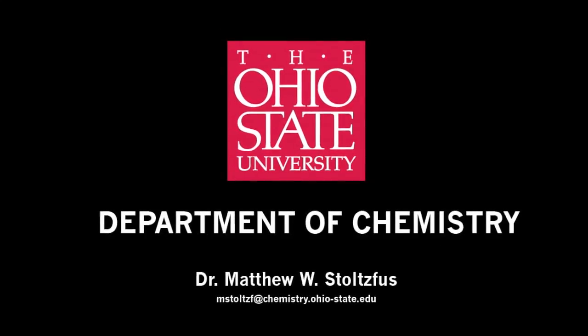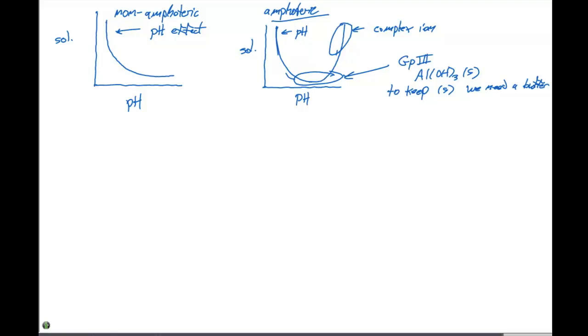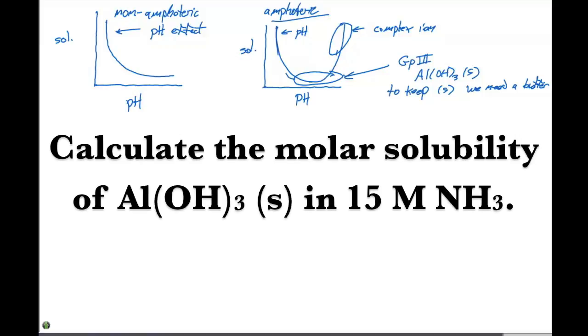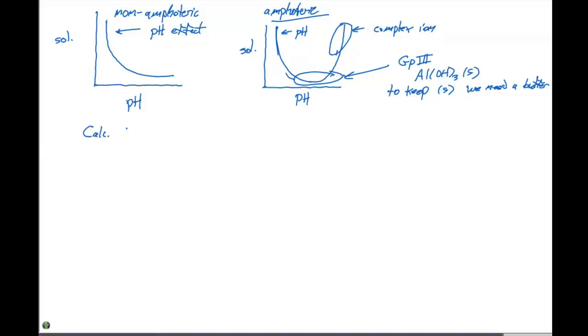Let's go over an example and we'll actually use the aluminum hydroxide to go through a calculation. The calculation we're going to be asked is we want to calculate the molar solubility of Al(OH)₃ as a solid in 15 molar ammonia.